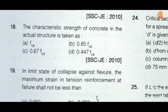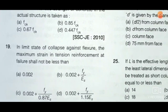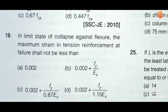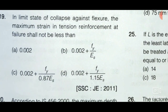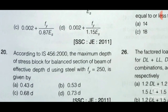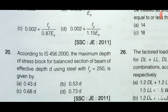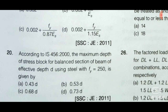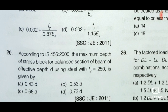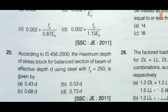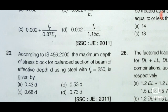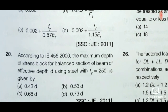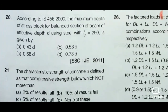Next question: In limit state of collapse against flexure, the maximum strain in tension reinforcement at failure shall not be less than — option D is the correct answer. Next question: According to IS 456:2000, the maximum depth of stress block for a balanced section of a beam of effective depth d using steel with fy 250 is — option B is the correct answer: 0.53d. For fy 415 it is 0.48d, and for fy 500 it is 0.43d.